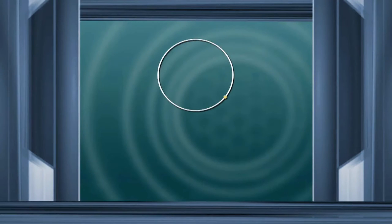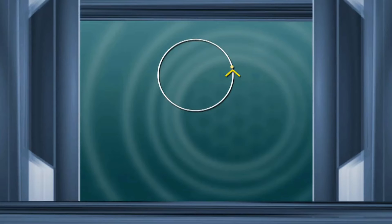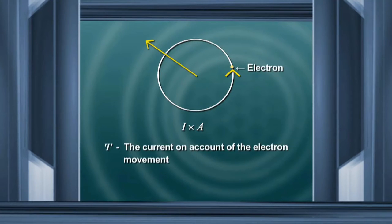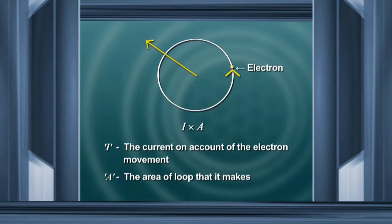If we look at an orbit and an electron and consider an anti-clockwise direction for it, in this anti-clockwise direction the magnetic dipole is set up in the direction of the arrow. Its value is given by I into A, where I is the current on account of the electron movement and A is the area of the loop — identified by the orbit.